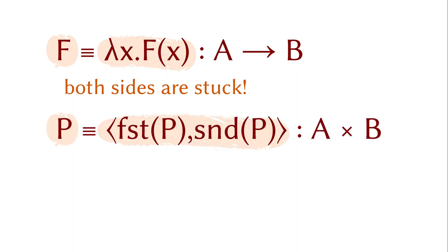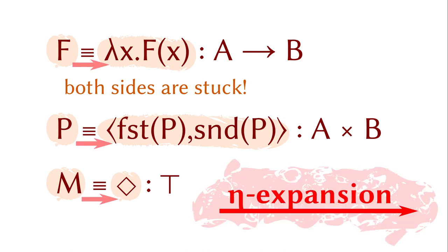Another instance is the term p of a pair type. According to the uniqueness rule, p is equal to the pair of its first and second projections. Yet another example is the unit type. The uniqueness rule says any element of it is judgmentally equal to the diamond.